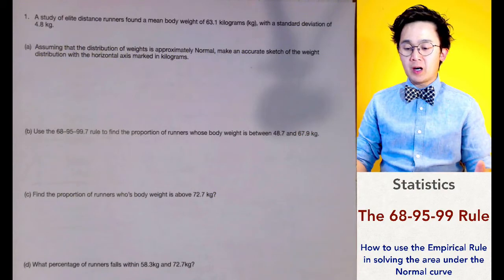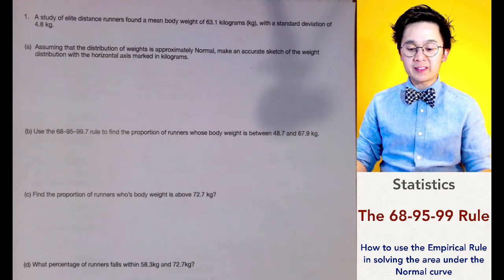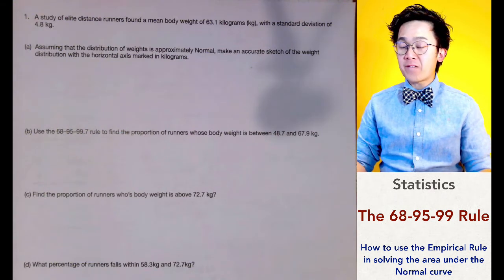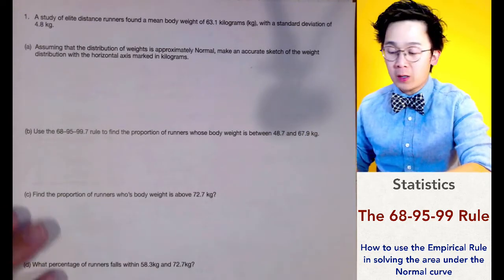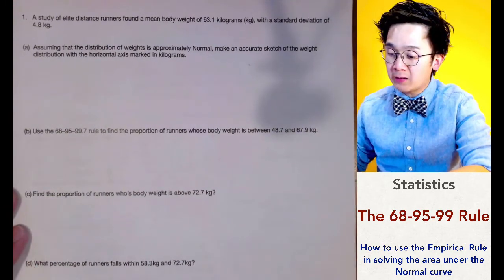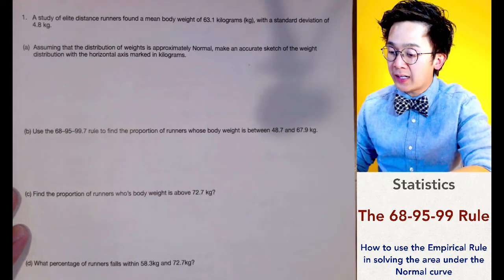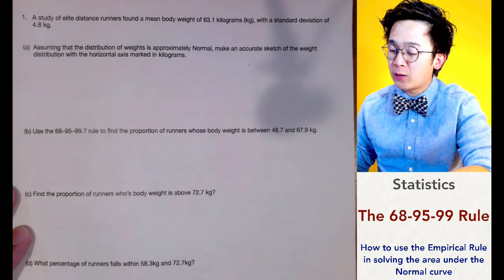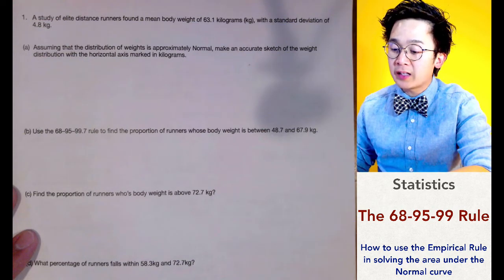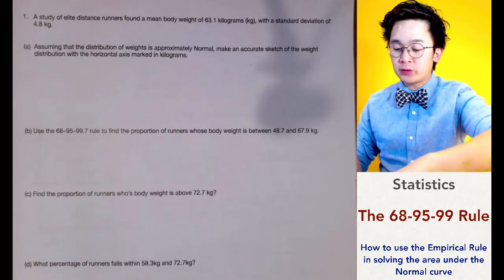Today we're going to be working on how to use the empirical rule, or the 68-95-99.7 rule, in finding the percentages of the distribution under the normal curve. We have a dataset of runners and we are given the mean body weight and its standard deviation.